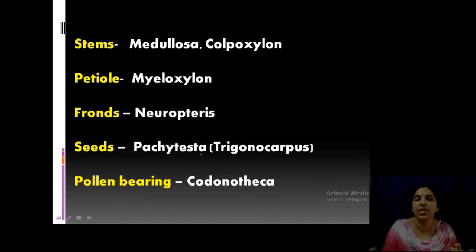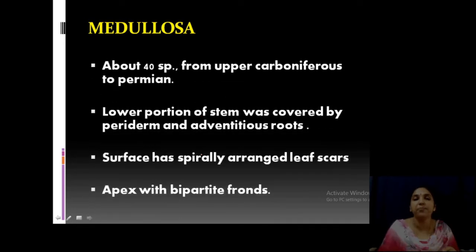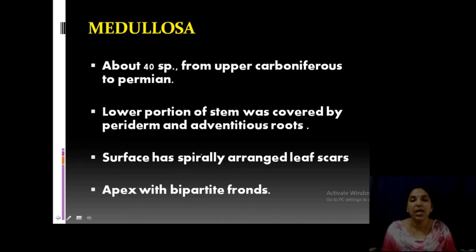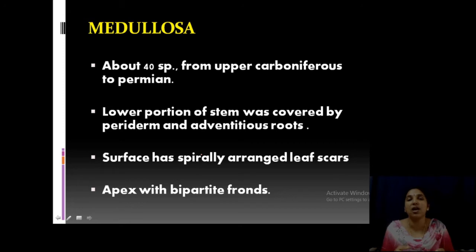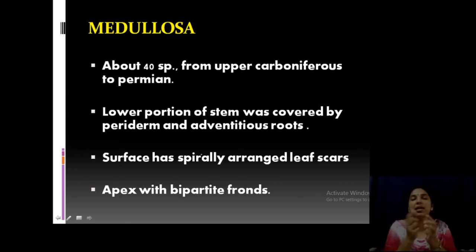Seeds are Pachytesta or Trigonocarpus; stem is Medullosa. Now moving on to Medullosa specifically — about 40 species are known. They occur in the upper Carboniferous period to the Permian period. The lower portion of the stem in Medullosa is covered by peridermal adventitious roots. Periderm is an external covering, and adventitious roots arise from the stem. There are also leaf scars on the surface — when a leaf falls, a marking arises on the stem.